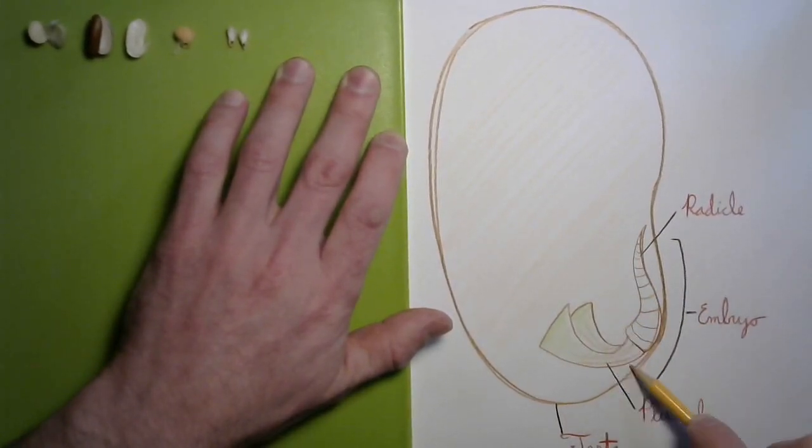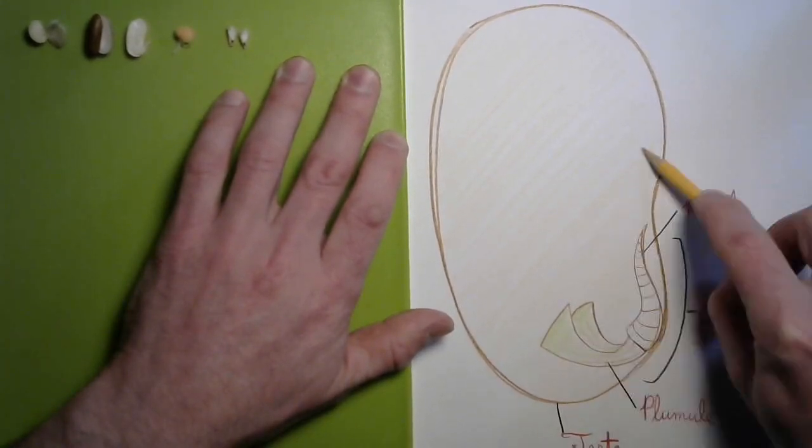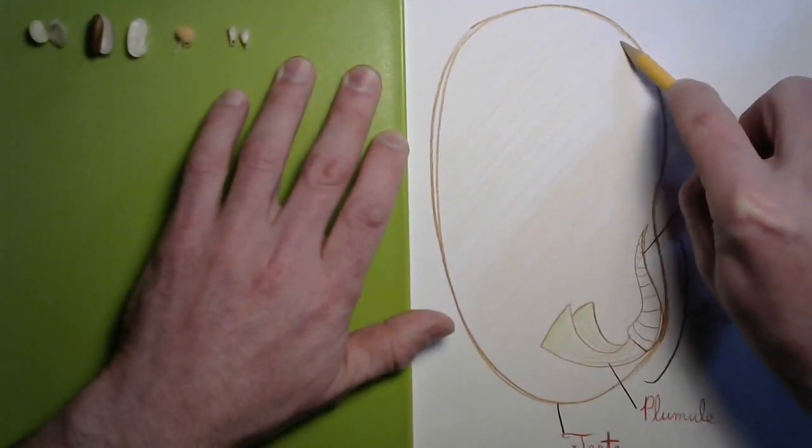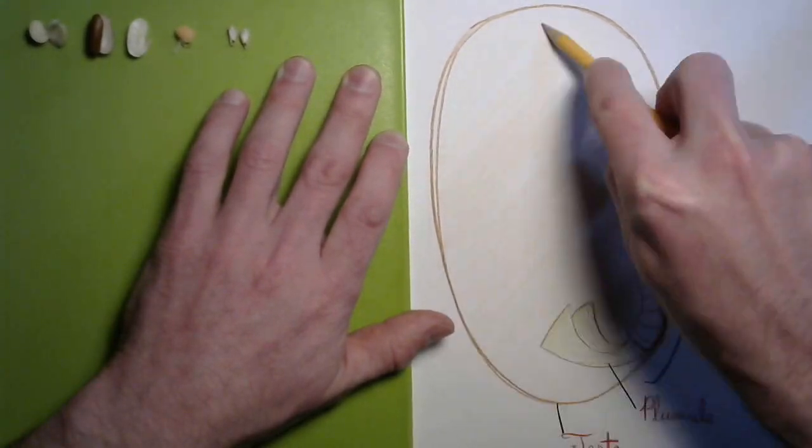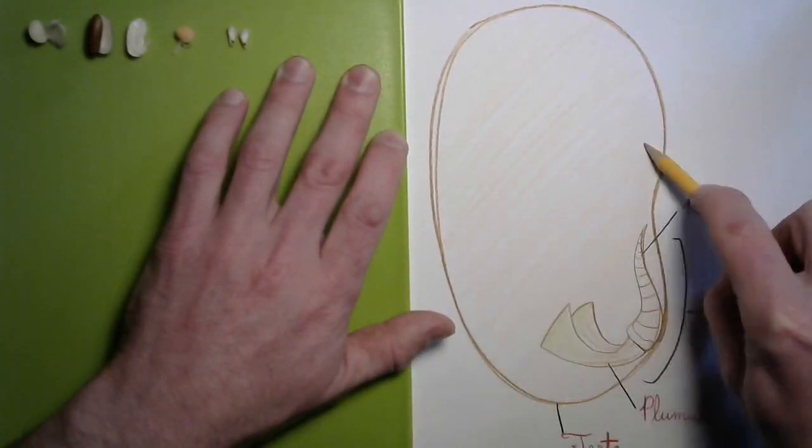The kind that break into two parts because they have two of these seeds, and the kinds that don't because they only have one. And as you sprout these two different kinds of seeds, you may notice some other differences as well.